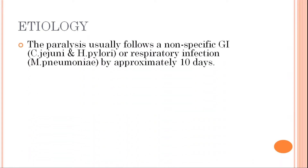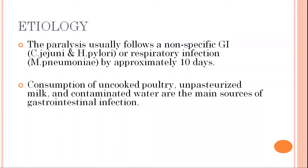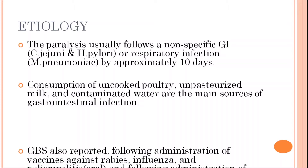Etiology: generally, GBS usually follows a known specific GI infection — gastrointestinal infection which occurs due to Campylobacter jejuni and H. pylori — or respiratory infection which occurs due to Mycoplasma pneumoniae. The paralysis usually follows the GI or respiratory infection by approximately 10 days. GI infection occurs due to consumption of uncooked food, unpasteurized milk, and contaminated water.